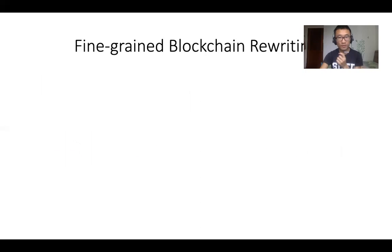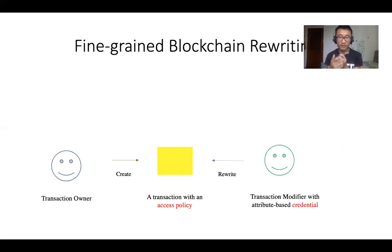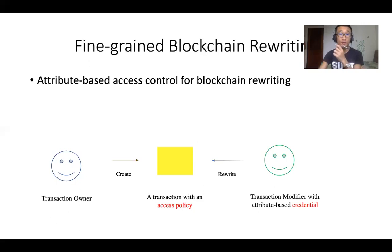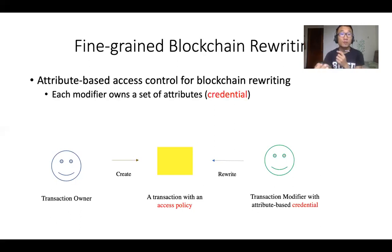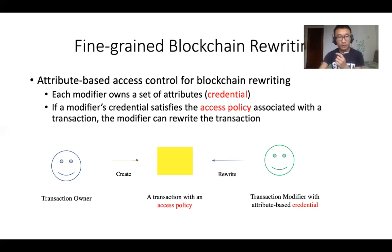What's the fine-grained blockchain rewriting? As you can see in this figure, there is a transaction owner and a modifier. The owner simply creates a transaction, and at the same time he will attach an access policy to this transaction. Later on, the transaction modifier with an attribute-based credential is allowed to rewrite this particular transaction. Basically, we are talking about attribute-based access control. We assume each modifier has a set of attributes — we call it attribute-based credentials. The key point here is if a modifier's credential satisfies the access policy associated with the transaction, then the modifier can rewrite this transaction.